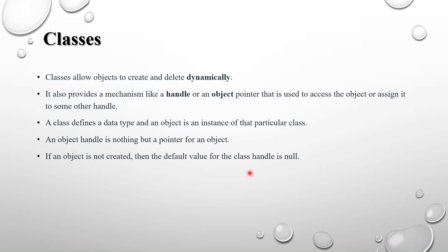If an object is not created, the default value for a class handle is null. Classes are dynamic in nature, so when you write 'transaction t1', no memory is allocated yet — t1 is just a handle. When it has no memory, it is null. Null is not a string; we don't write it in double quotes. Null simply means memory has not been allocated yet.